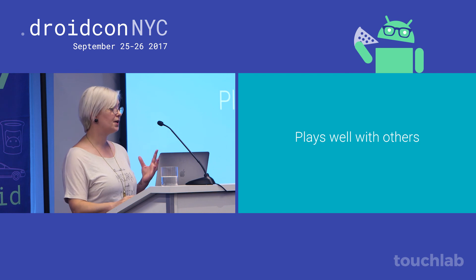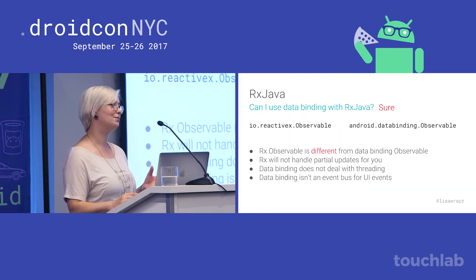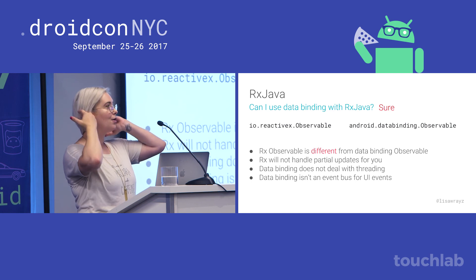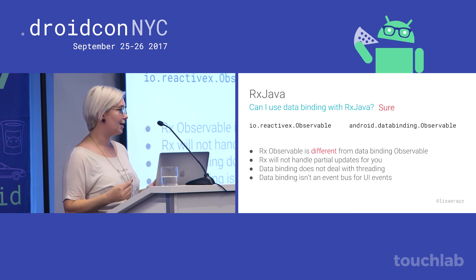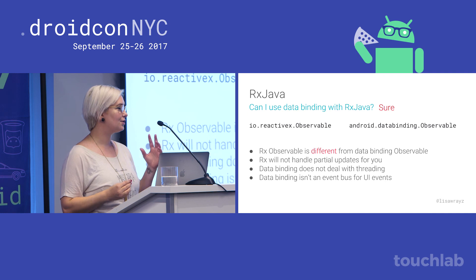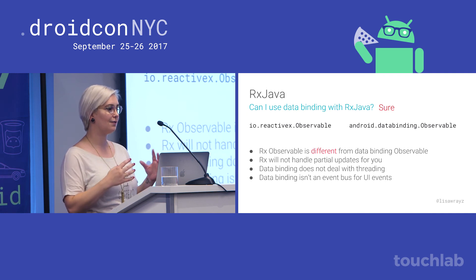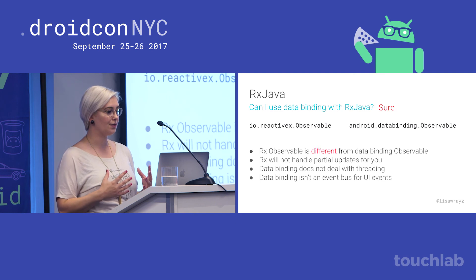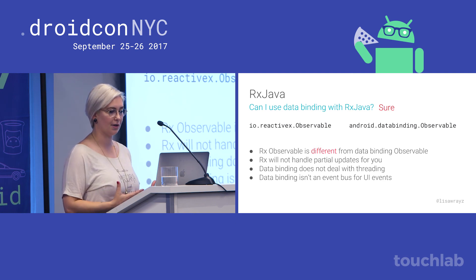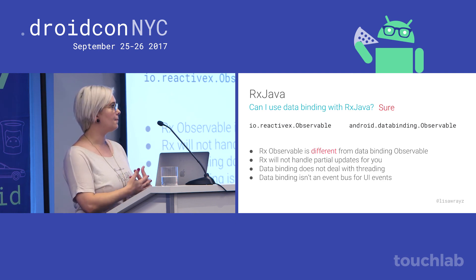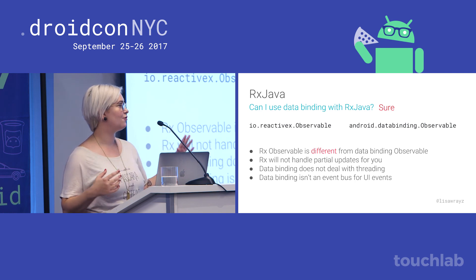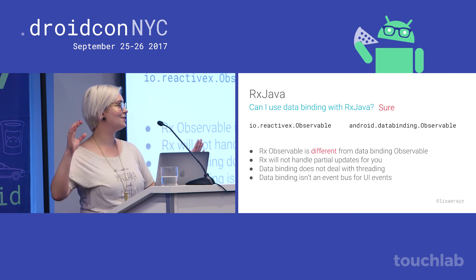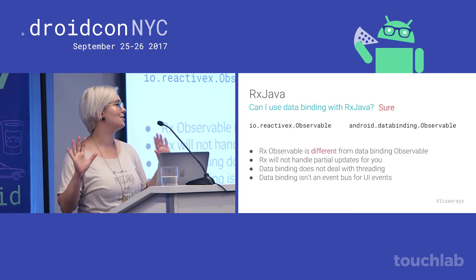Finally, it plays well with others. The number one question: what does RxJava have to do with data binding? Can I use them together? The answer is sure, you can use them together, and they actually have fairly little to do with each other. They are both frameworks encouraging functional programming. The Rx observable has nothing to do with the data binding observable, and they are not interchangeable.